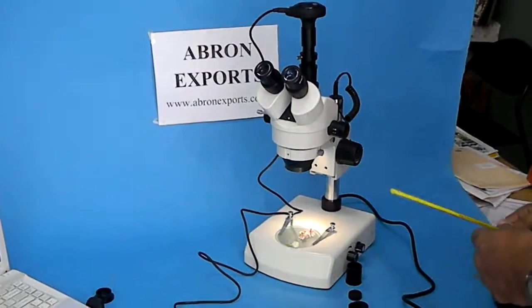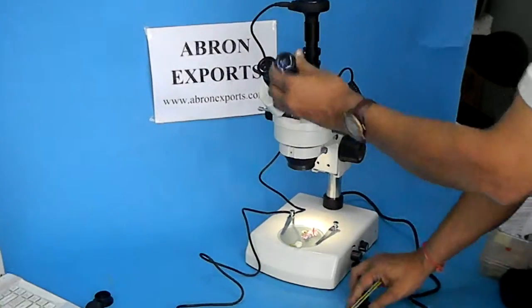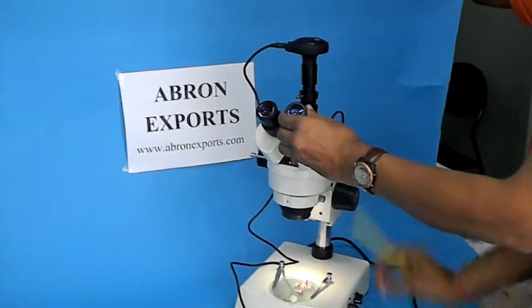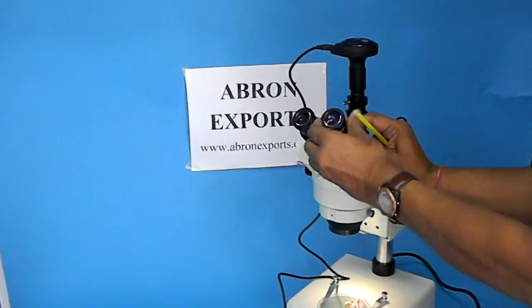Stereo Microscope. Let us learn the parts of the stereo microscope. There are two eyepieces. This is the cap. You remove the cap and then put both the eyepieces in both the sockets.